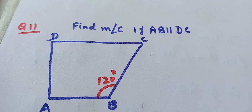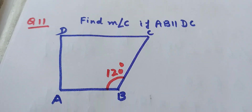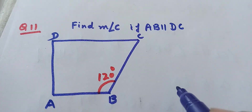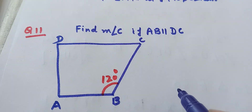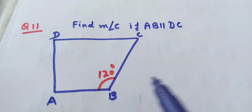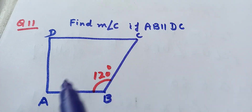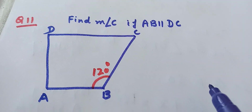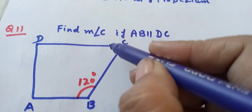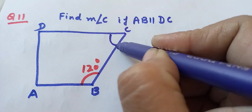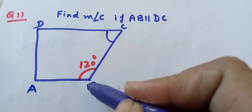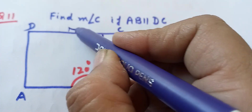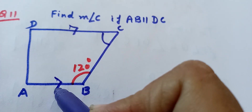Now question number 11. ABCD is a quadrilateral given in which AB is parallel to DC, meaning this is a trapezium, and you have to find out angle C. Angle B is given as 120 degrees. Now these two lines are parallel.